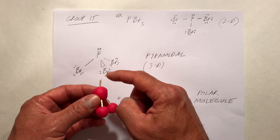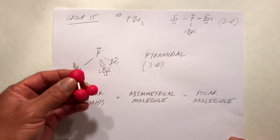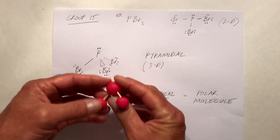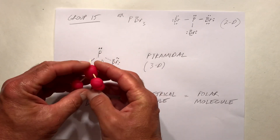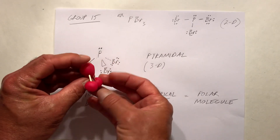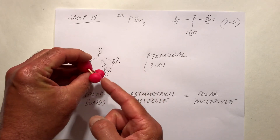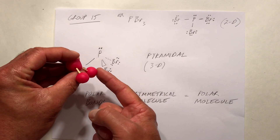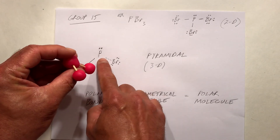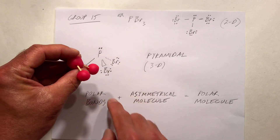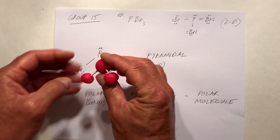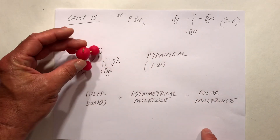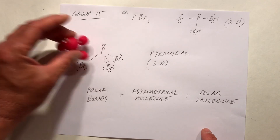The non-bonding electrons are represented by that toothpick sticking out. We put one bond in the plane, one bond that comes out towards us represented by the triangle, and one bond that goes away from us represented by the dashed line. That's called a pyramidal molecule — some would call it trigonal pyramidal.